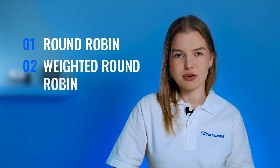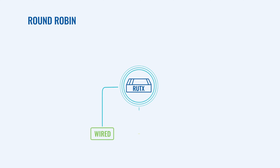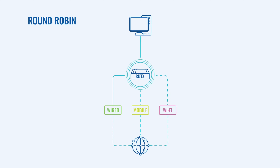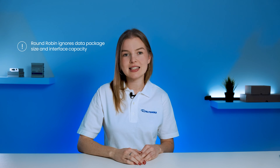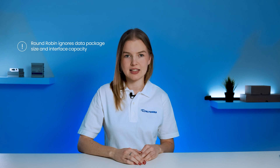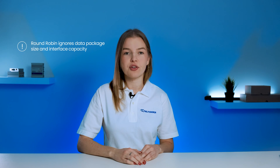Load balancing in your networking devices can be implemented in many ways, but for the purposes of this video, let's focus on two fundamental configurations – round robin and weighted round robin. Round robin is the least complex configuration. It enables distributing data packets, connections and requests across all available interfaces in a cyclical manner. Keep in mind that round robin doesn't consider the size of your data package or the capacity of each interface.